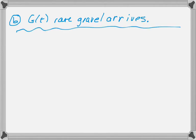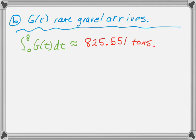This is your standard integral of a rate gives you total. So, if we integrate the rate from 0 to 8, you end up with approximately, this is calculator again, 825.551 tons. That's all there is to part B.